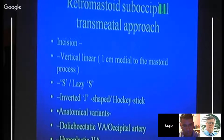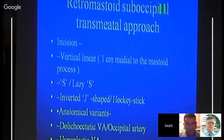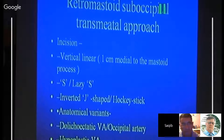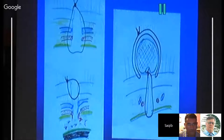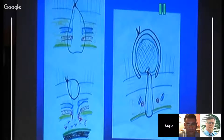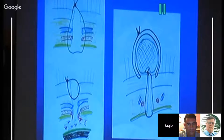For retrosigmoid suboccipital craniotomy, you can use a vertical linear incision, lazy-S incision, or a J or hockey stick incision. Anatomical variants encountered include a disjunctive vertebral artery, occipital arteries, or hypoplastic vertebral artery. When closing, always ensure you take all layers of the scalp, including the galea — closing only the superficial layer will not achieve proper healing and may cause bleeding inside.